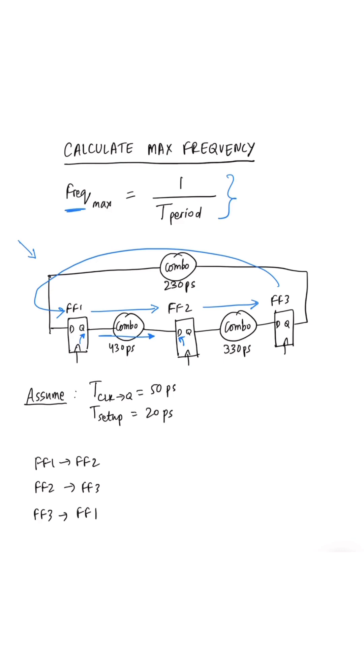If we write the equation for all three flops, for FF1 to FF2 path, we have the clock to Q delay of 50, plus the combinational delay of 430, and the setup time of 20, which is 500. So 500 is the minimum clock period which is required for this timing path to work correctly, otherwise there will be setup timing violations.